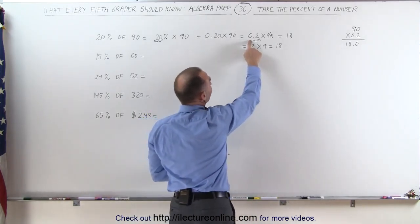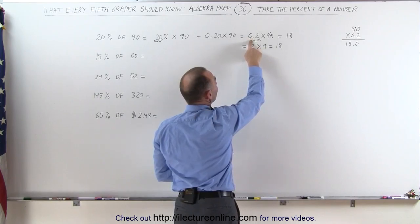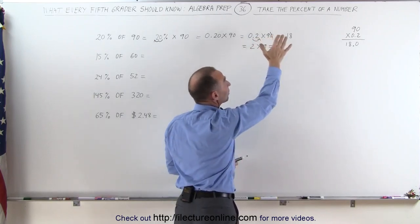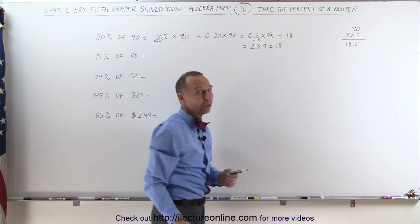Again, if you have a decimal place like this, if you multiply this times 10 and divide that by 10, nothing has changed and it's a lot easier to multiply.